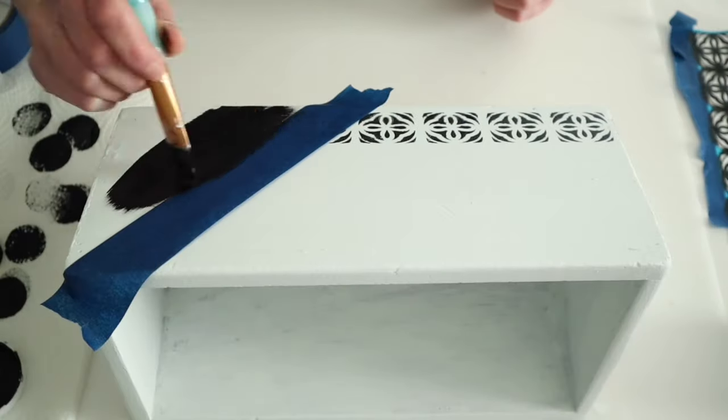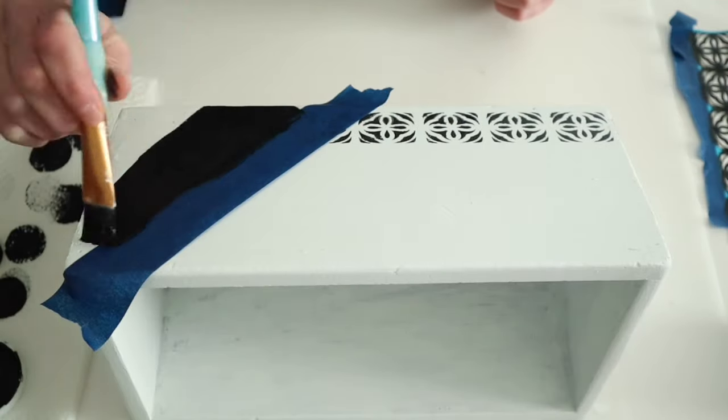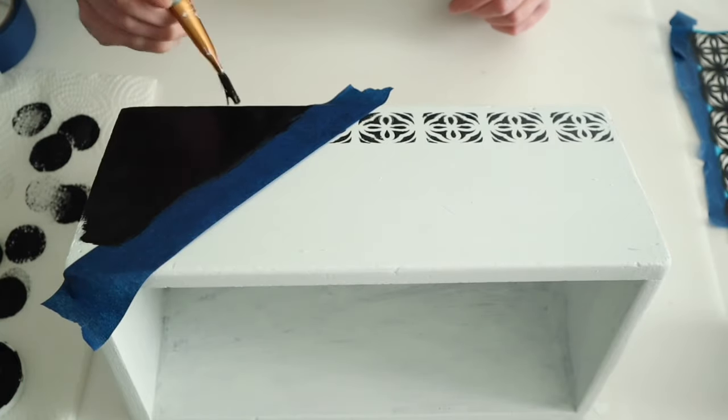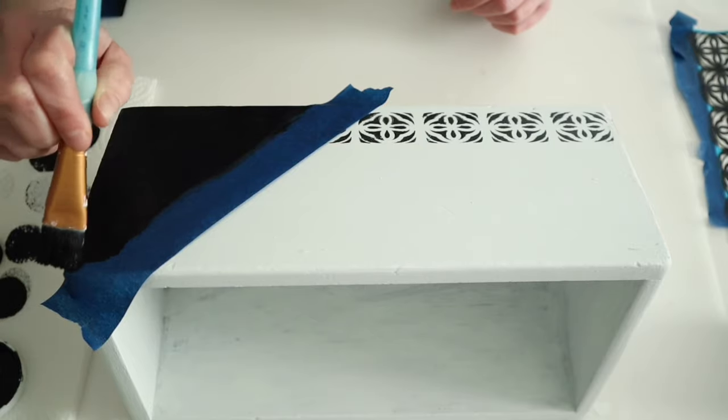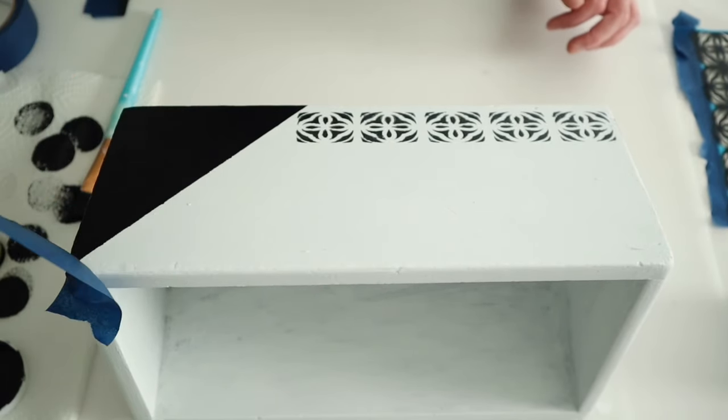Then I went ahead and used some more painter's tape to tape off a triangle on the side of the box right there. And I ended up doing this on the front and the back of the box. And then on the sides of my box, I just used the stencil.